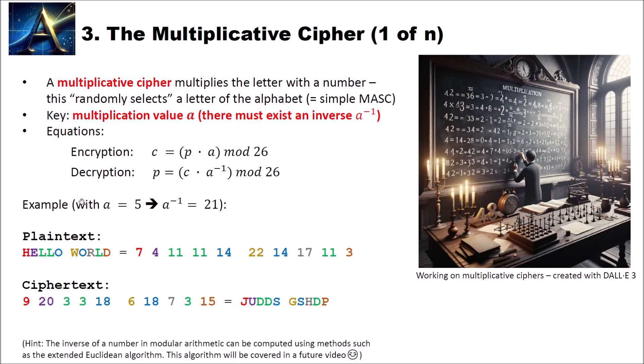Here is also an example with a equal to 5, which means our inverse of a is 21. We first again convert our plaintext here, hello world, to numbers. And then we use these equations here. We multiply 7 with 5. This is 35. And when we take mod 26 we get 9. We compute 4 multiplied with 5. This is 20. And then when we have our ciphertext numbers here, we can convert these to letters. Our final ciphertext then is J U D D S G S H D P. And as you can see here, same letters are encrypted to the same ciphertext. The same L's here are encrypted to D's. So this is a simple monoalphabetic substitution cipher.